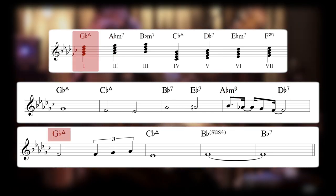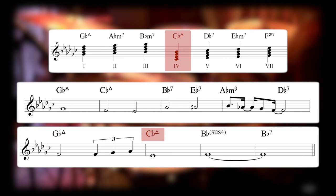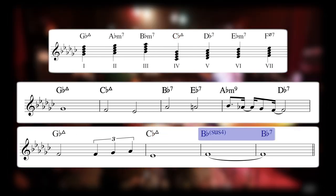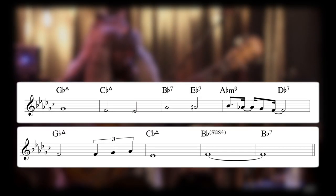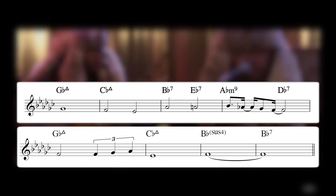We come back to G flat major 7, the 1, C flat major 7, the 4, and then this B flat sus to B flat 7, which is again secondary 5. The melody elegantly moves between chords bouncing off on important notes of the chords and some tension and resolution.